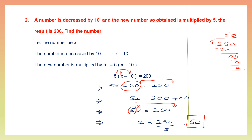You can always check your answer. We found the number to be 50. Decrease it by 10 and it becomes 40. The new number so obtained is 40; multiply it by 5 and 40 times 5 is 200. The question says the result is 200, so you can always check your answer by going back to the question.